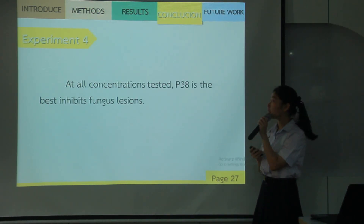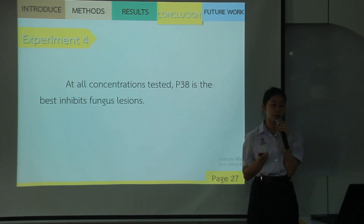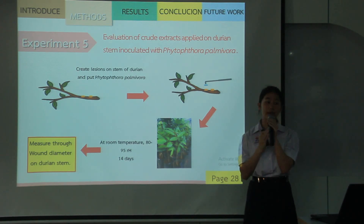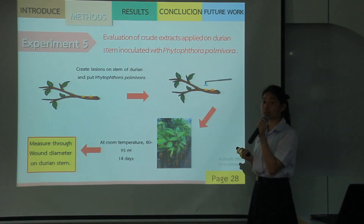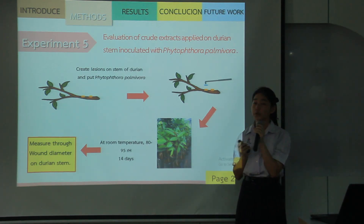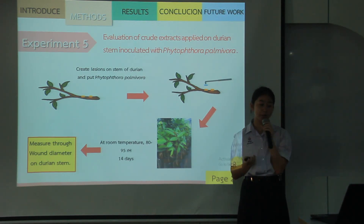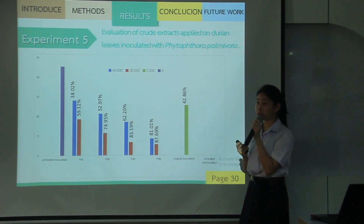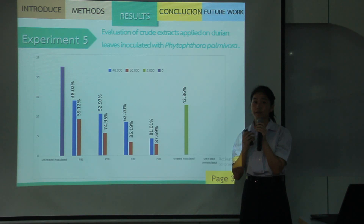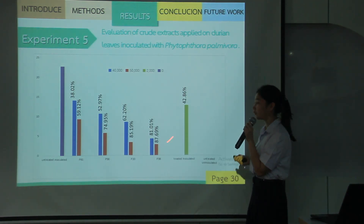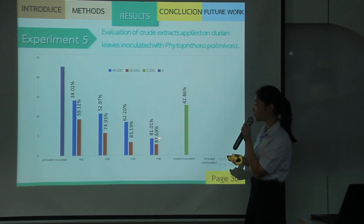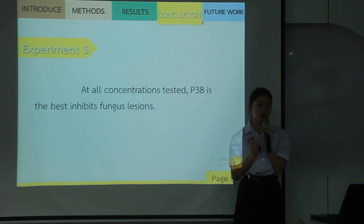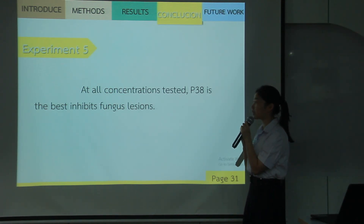Conclusion: at all concentrations, P38 is the extract that best inhibits fungal lesion development. Experiment 5: evaluation of extract applied on durian stem inoculated with Phytophthora palmivora. This step is done similarly to the chili, but wounds are made at 3 and 8 cm from the root respectively. From the graph, P38 can inhibit lesion development up to 87.69%. Conclusion: at all concentrations, P38 is the extract that best inhibits fungal development.